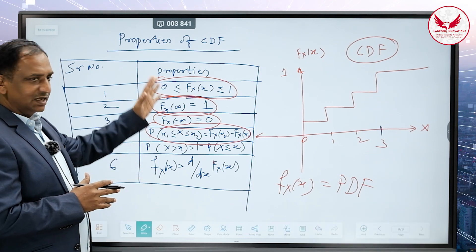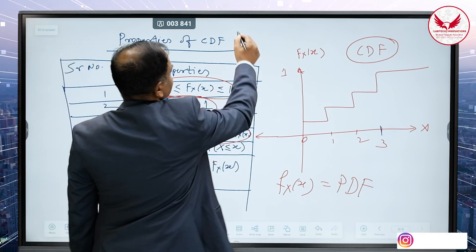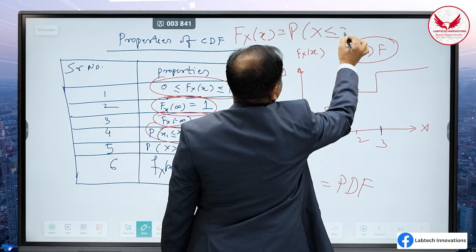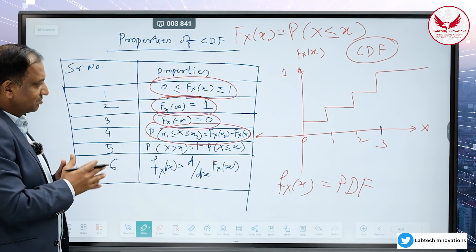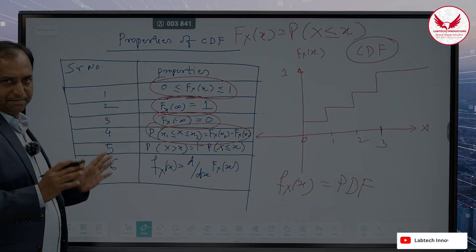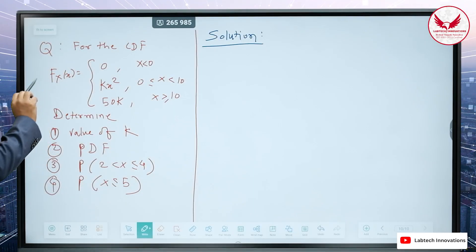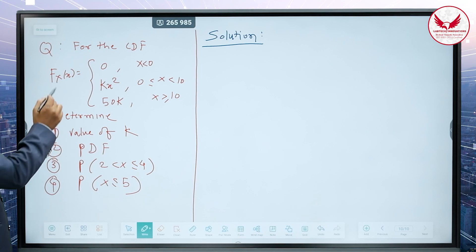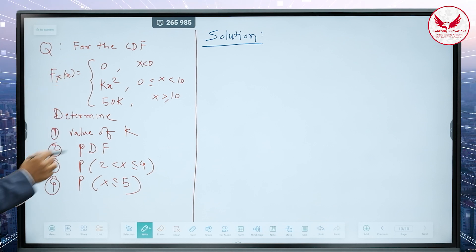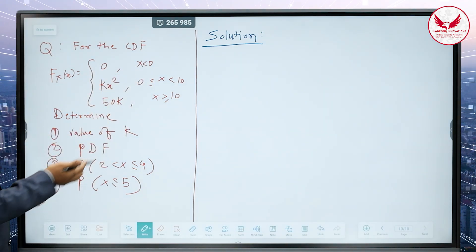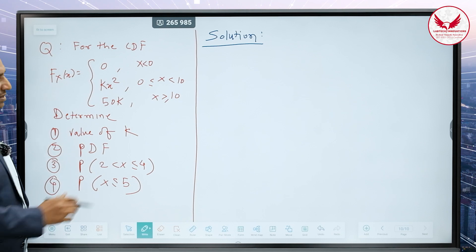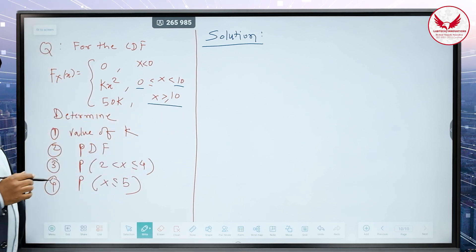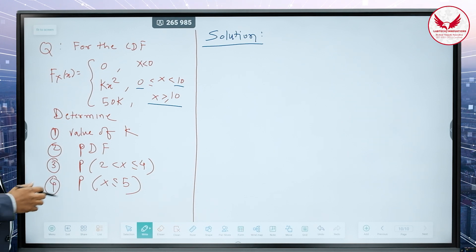Now we need to solve a CDF problem. The CDF definition — once again: F_X(x) is equal to the probability of X less than or equal to small x. The problem is given as a piecewise CDF: F(x) equals 0 for x less than 0; kx² for 0 ≤ x ≤ 10; and 50k for x greater than or equal to 10. They ask you to find the value of k, find the PDF, and find probabilities.